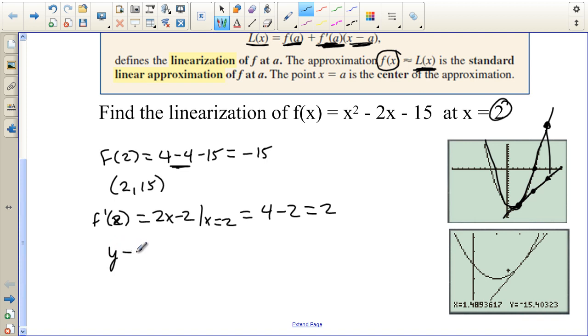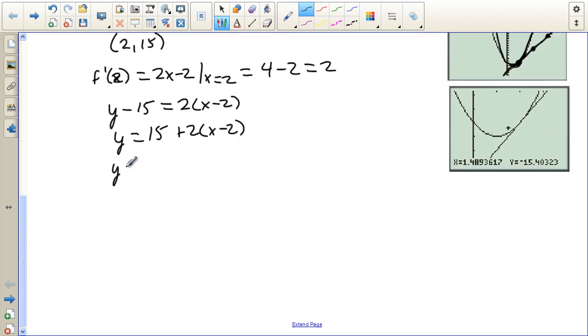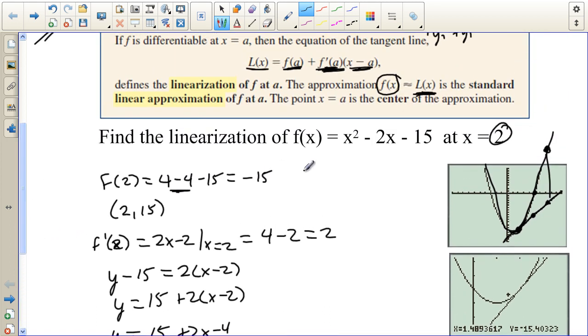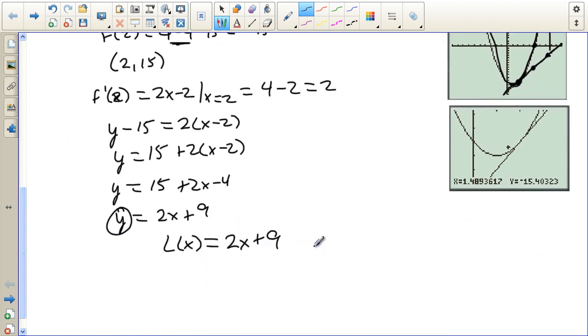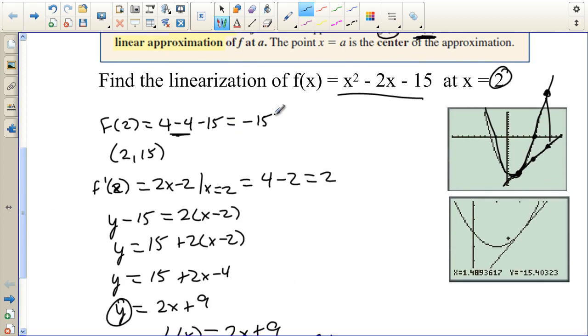So the line is y minus (-15) equals 2 times (x - 2). So we have y equals -15 plus 2 times (x - 2). And of course, we can simplify that. We have y equals -15 plus 2x minus 4. And so y equals 2x - 19. But instead of writing y, we'll write L(x) to denote that this line is used as an approximation to this curve, but only very close to 2. So this would be a good approximation as long as we use something like 2.1 or 2.2 or 1.8. As long as we plug these values in, it's going to be a very close approximation to the original function.